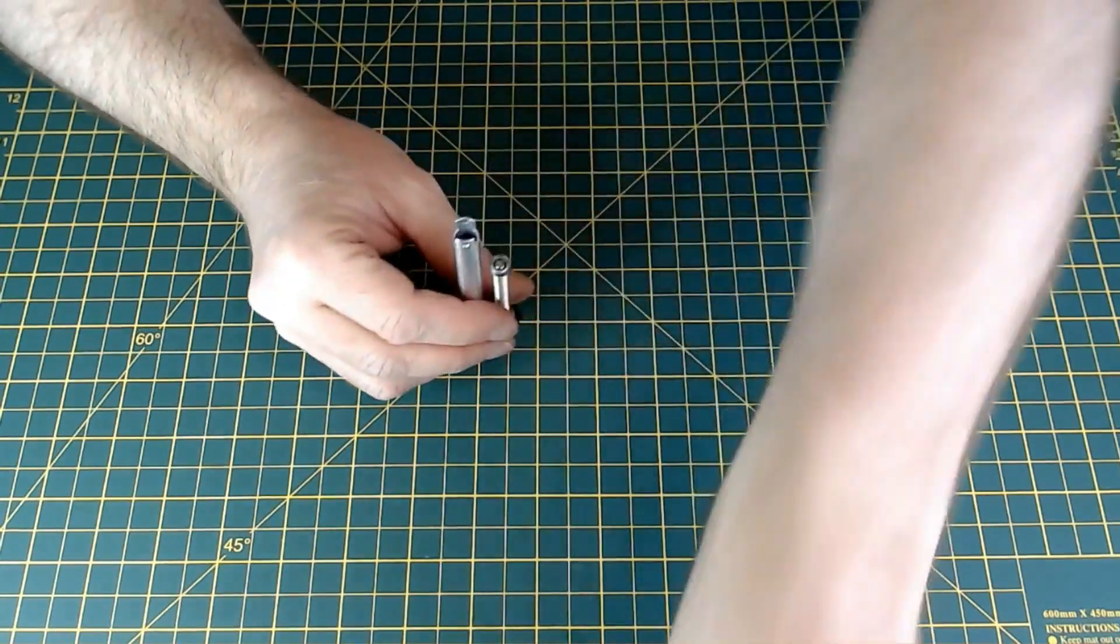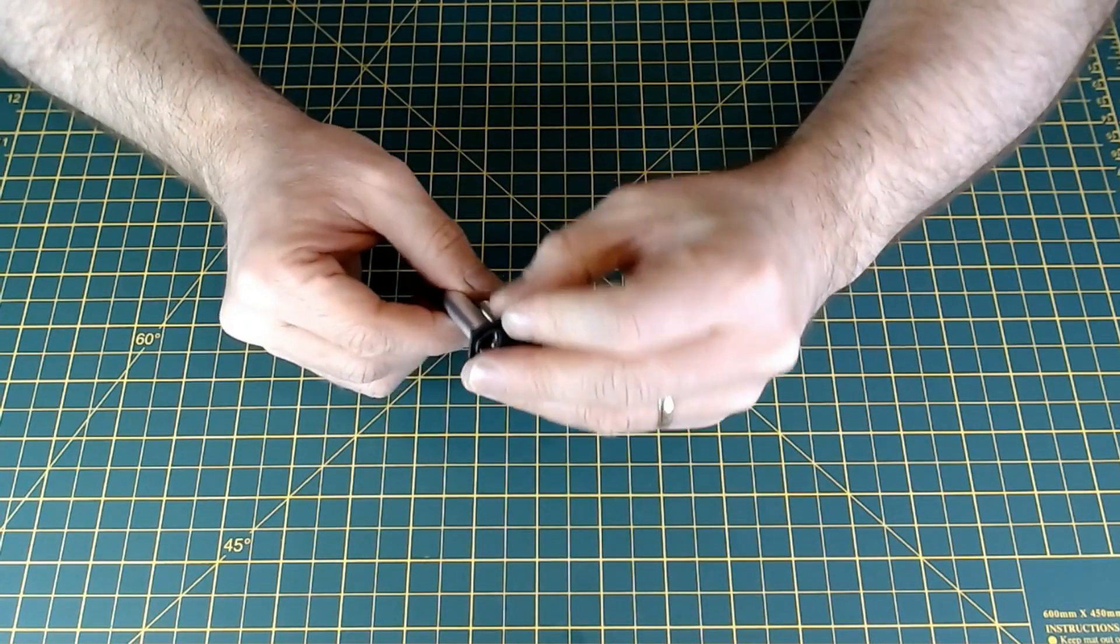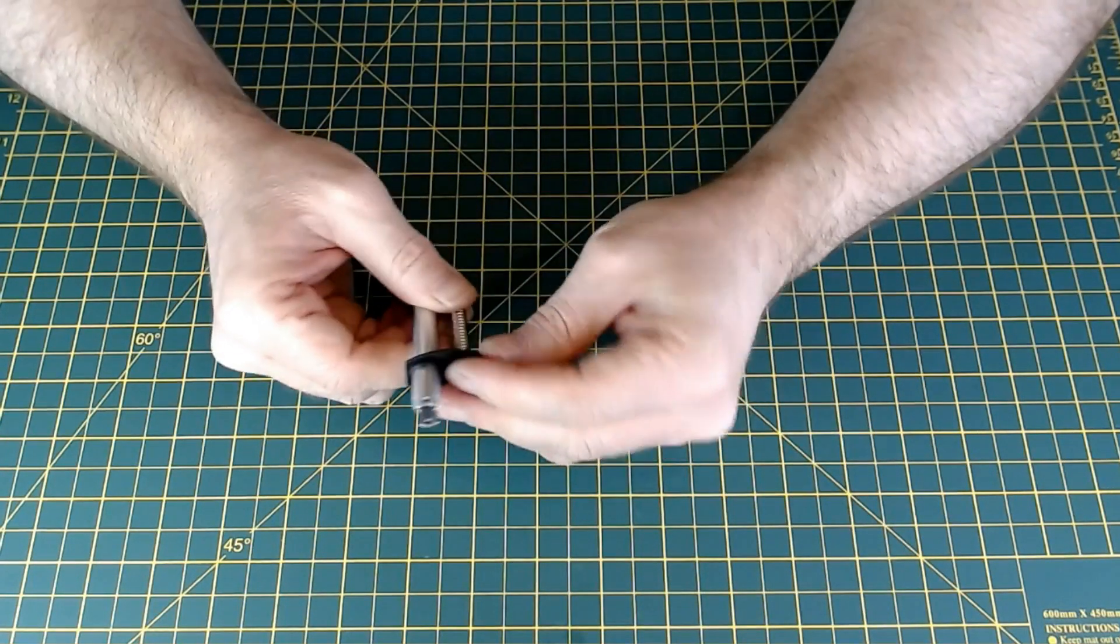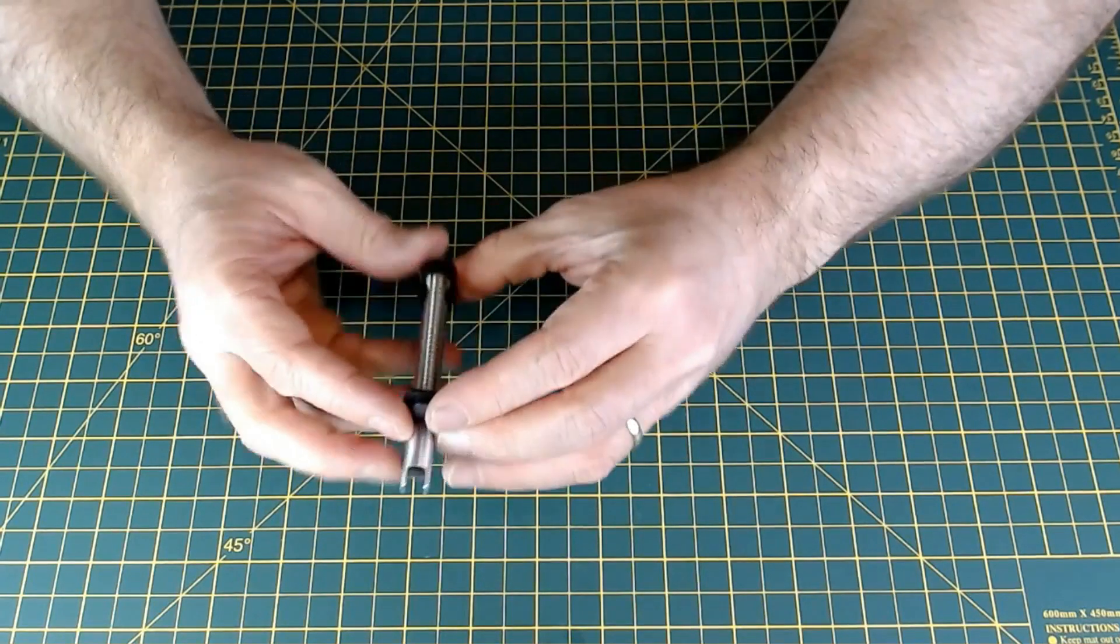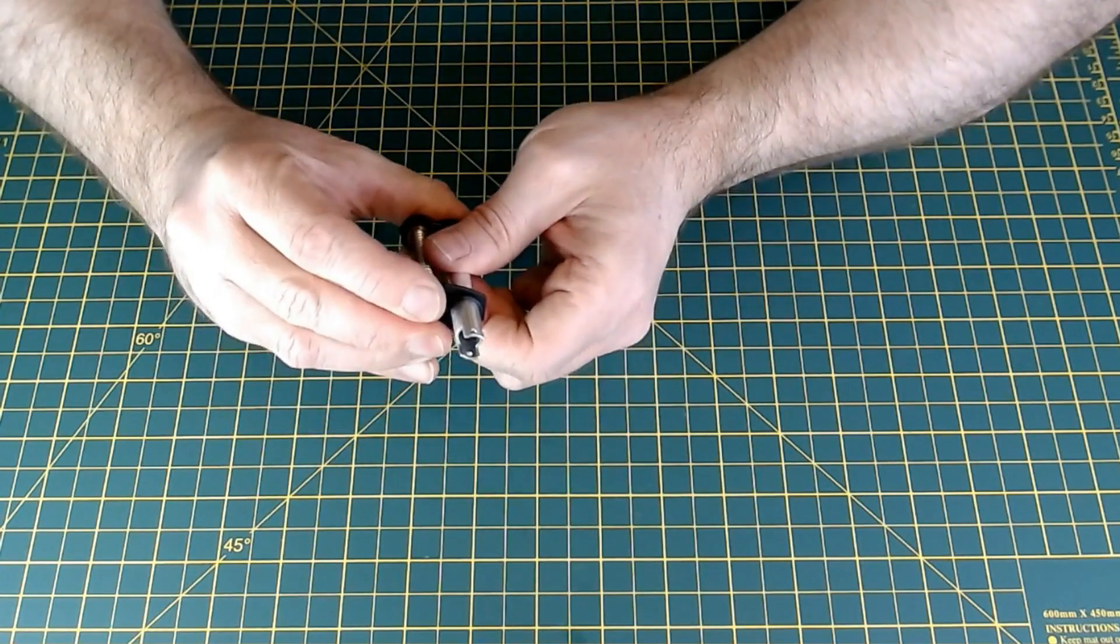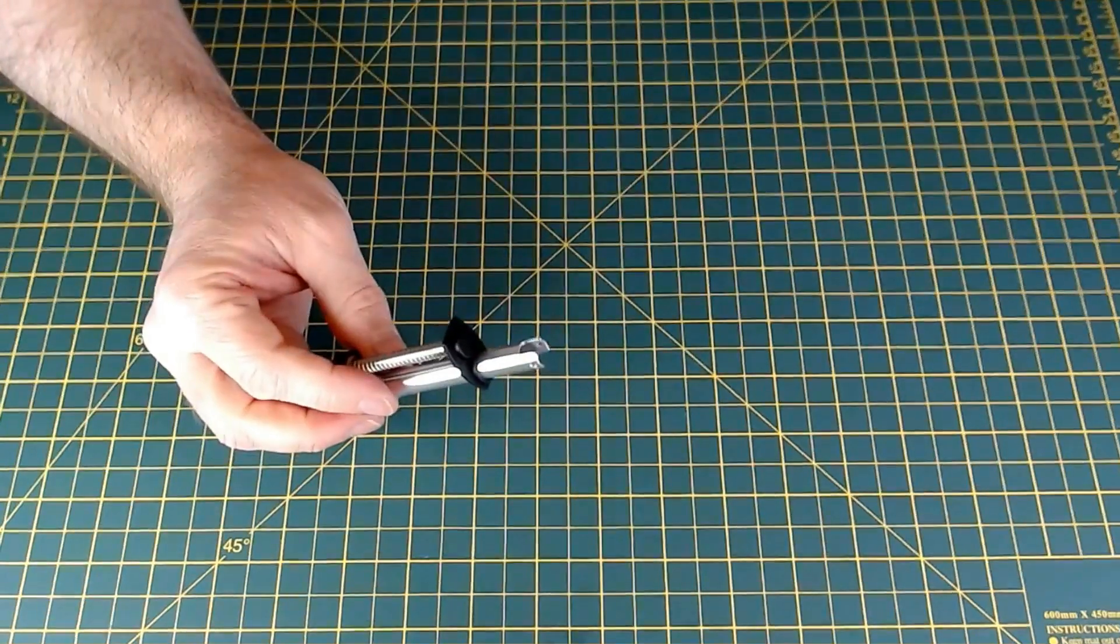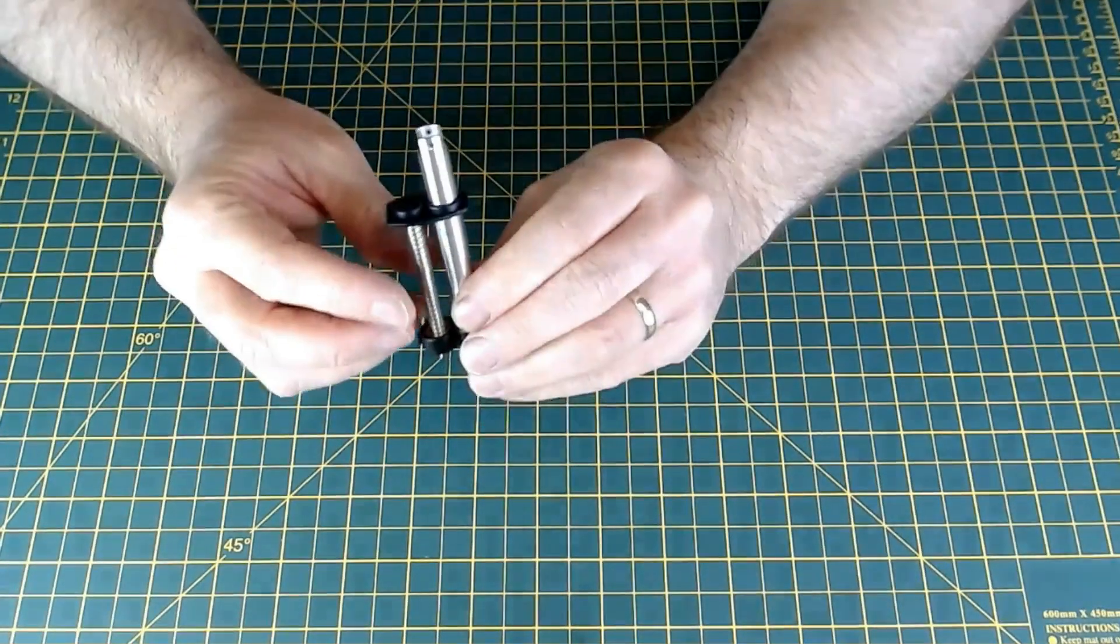Now bring this cap over. As always, the cap goes in—you can only go one way because it fits the bearing.